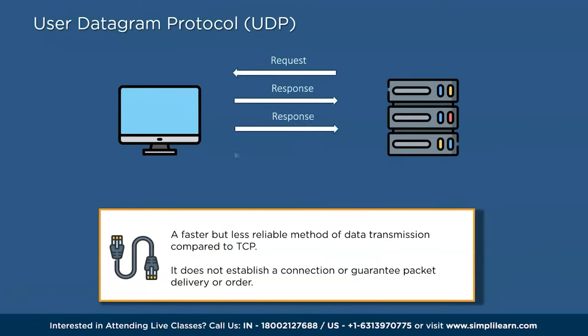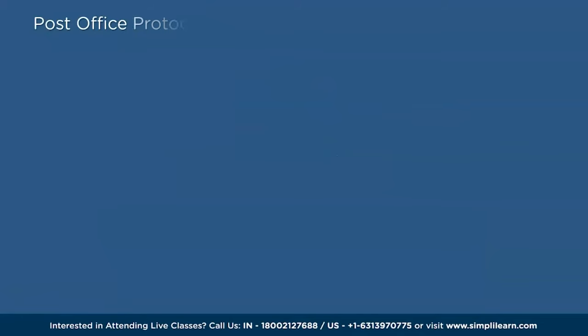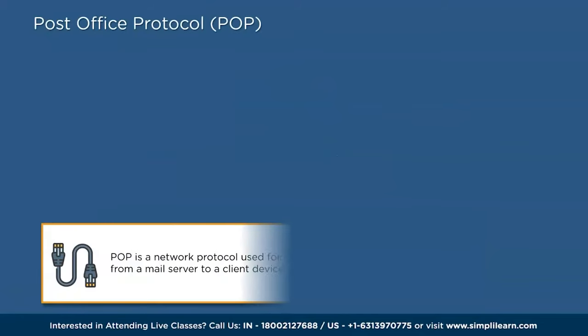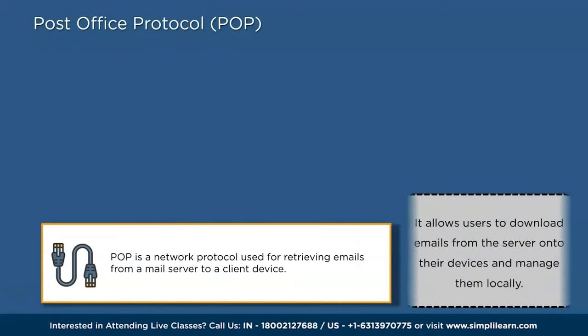The third type is UDP, or User Datagram Protocol. UDP is a network protocol that provides a faster but less reliable method of data transmission compared to TCP. It does not establish a connection or guarantee packet delivery or order. UDP is commonly used for time-sensitive applications like video streaming or online gaming, where a small amount of data loss is acceptable.